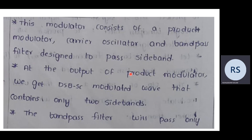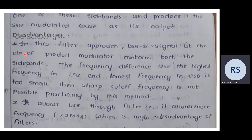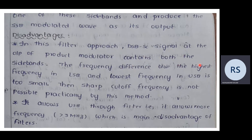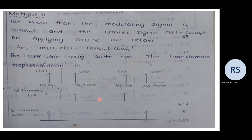The design concern with the filter approach is that the DSB-SC signal at the output of the product modulator contains both sidebands, and the frequency difference between the highest frequency in the LSB and the lowest frequency in the USB is too small. A sharp cutoff filter is not practically achievable by this method. It allows the USB through the filter for frequencies greater than 3 MHz, which is the main design constraint.